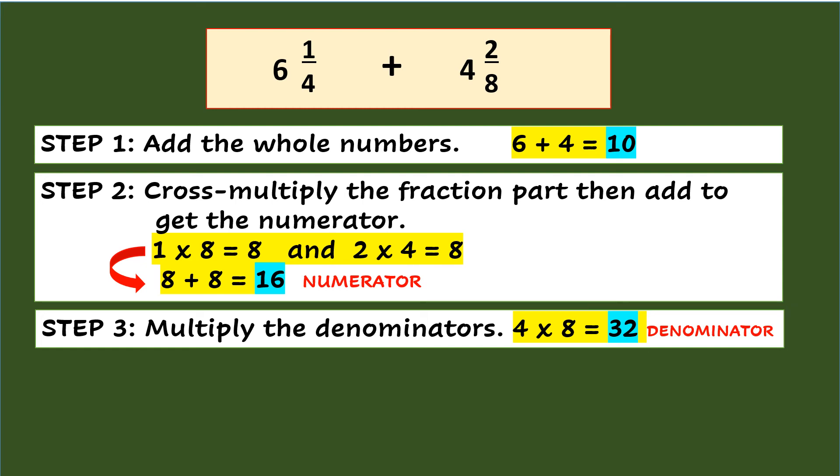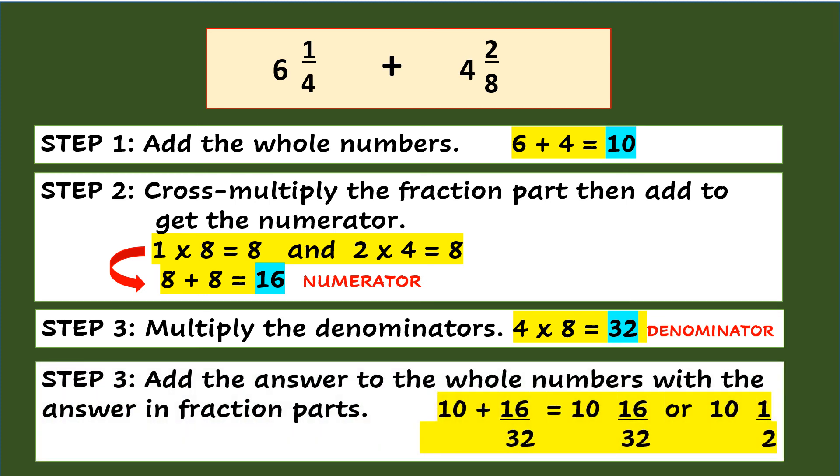Finally, add the answer to the whole numbers with the answer in fraction parts. So 10 plus 16 over 32 equals 10 and 16 over 32, or simplifying it is 10 and 1 half.